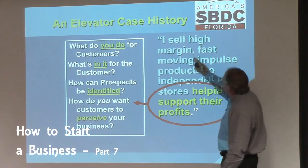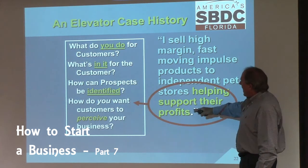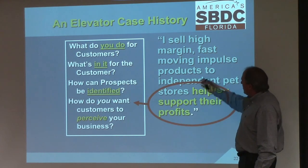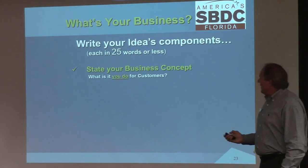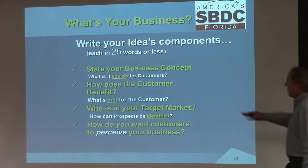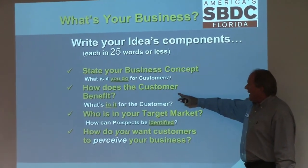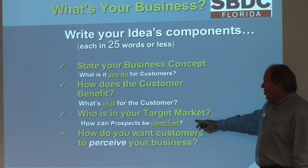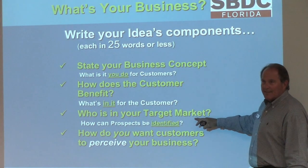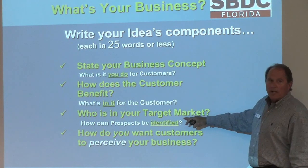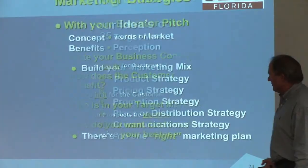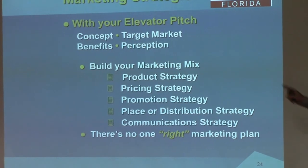This is the element — what do you do for them? You sell high-moving, high-margin products. What's in it for them? They get more profit. Who are they? That's your target market. Your business concept needs to define what you do for them, how the customer benefits, and who your target is. Many say 'my target customer is everybody,' but that's hard to market because you don't have enough money to sell to everybody — unless you're Coca-Cola.